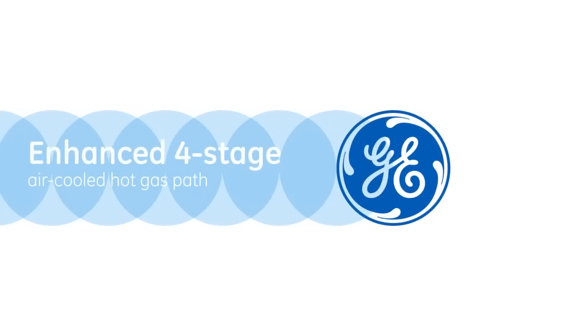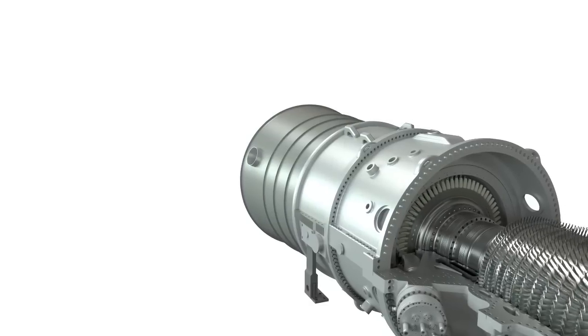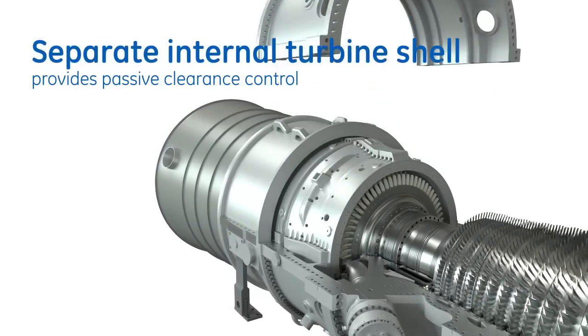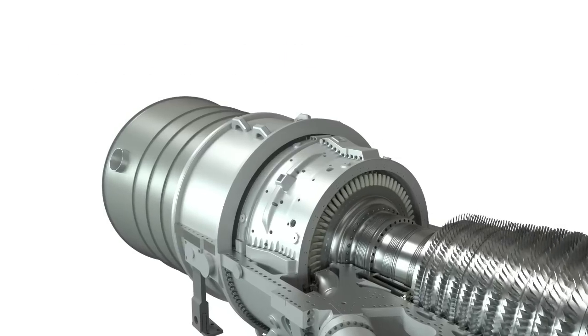The 9HA's four-stage air-cooled hot gas path consists of inner and outer shells to better manage clearances. The inner turbine shell supports close bucket and seal clearances, acting as passive clearance control.